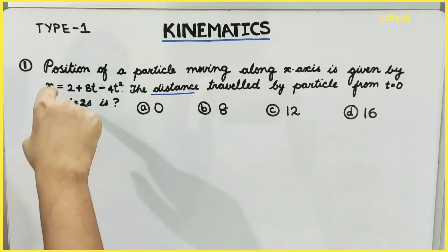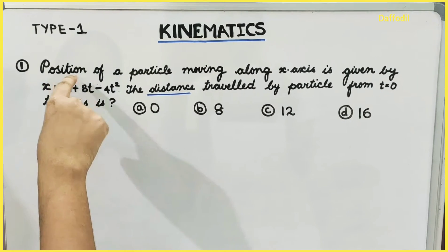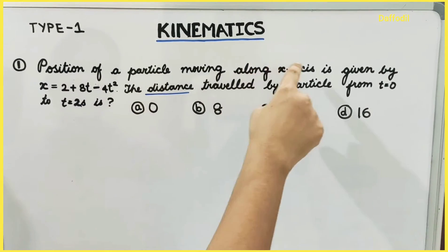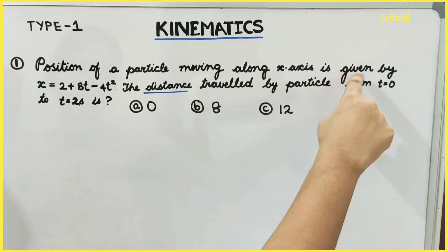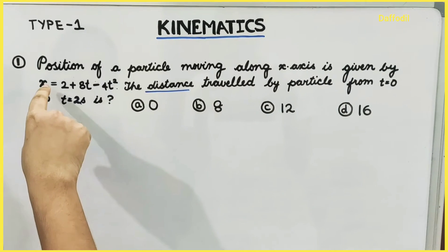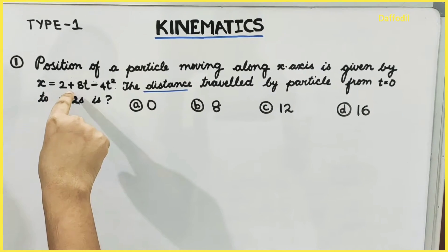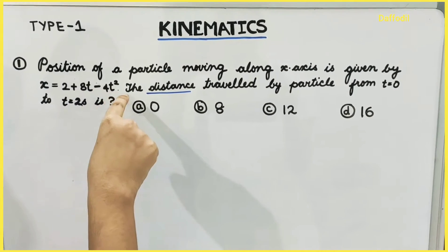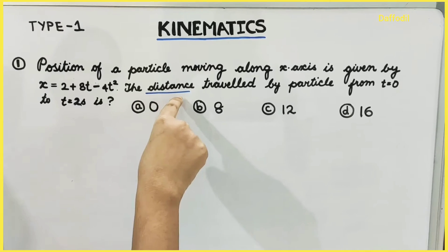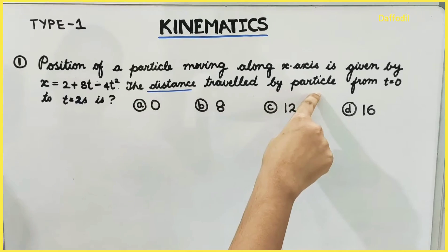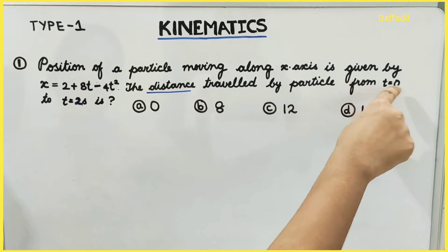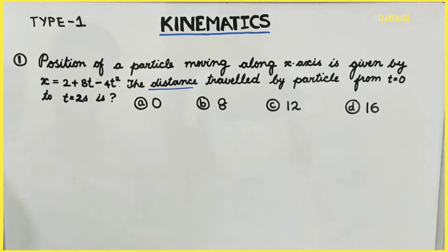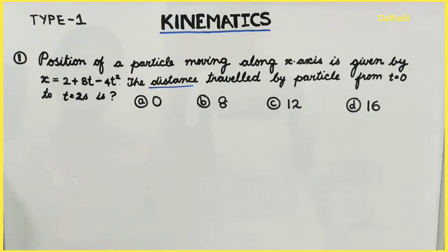Kinematics Type 1 Question. Position of a particle moving along the x-axis is given by x = 2 + 8t − 4t². The distance travelled by the particle from t = 0 to t = 2 seconds is asked.